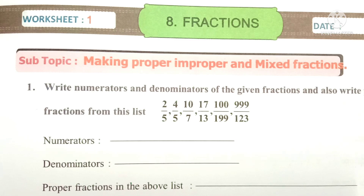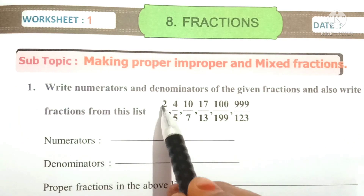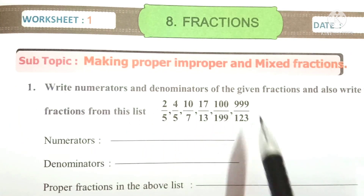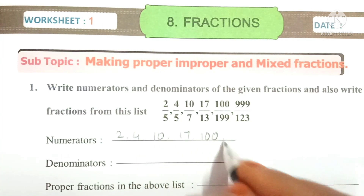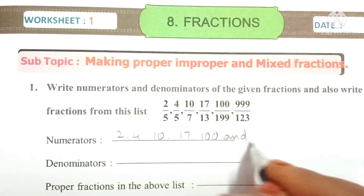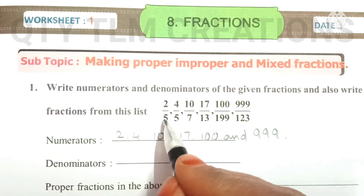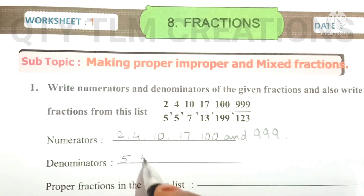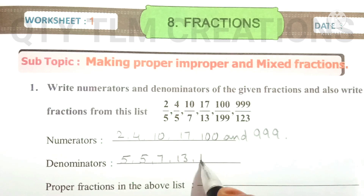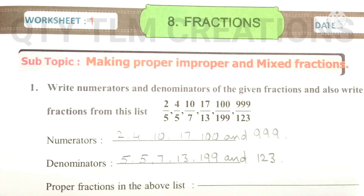The numerators in these fractions are: 2, 4, 10, 17, 100, and 999. The denominators in these fractions are: 5, 5, 7, 13, 199, and 123. Next, we identify the proper fractions from the above list.